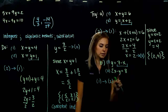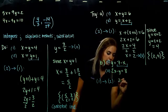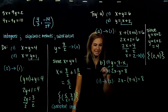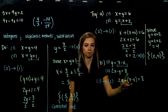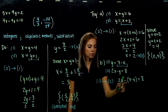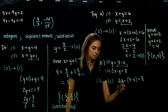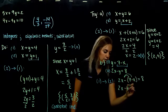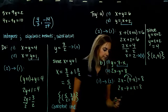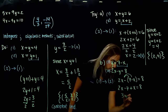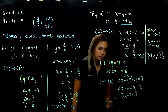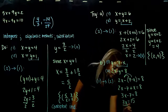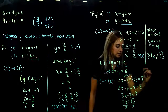We're looking at 2x minus (7 minus x) equals 8. In this example, do the parentheses matter? They sure do, because we have a negative on the outside. To get rid of those parentheses we distribute: we get minus 7 and a negative times a negative gives positive x. Combining like terms: 3x's. Adding 7 to both sides gives 3x equals 15, so x equals 5.